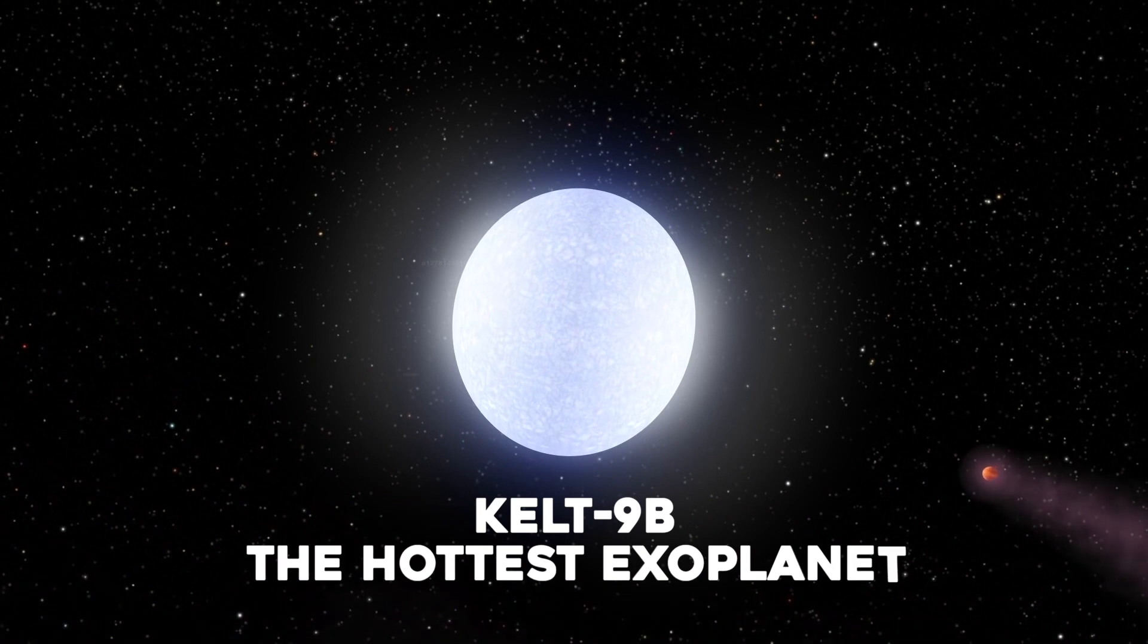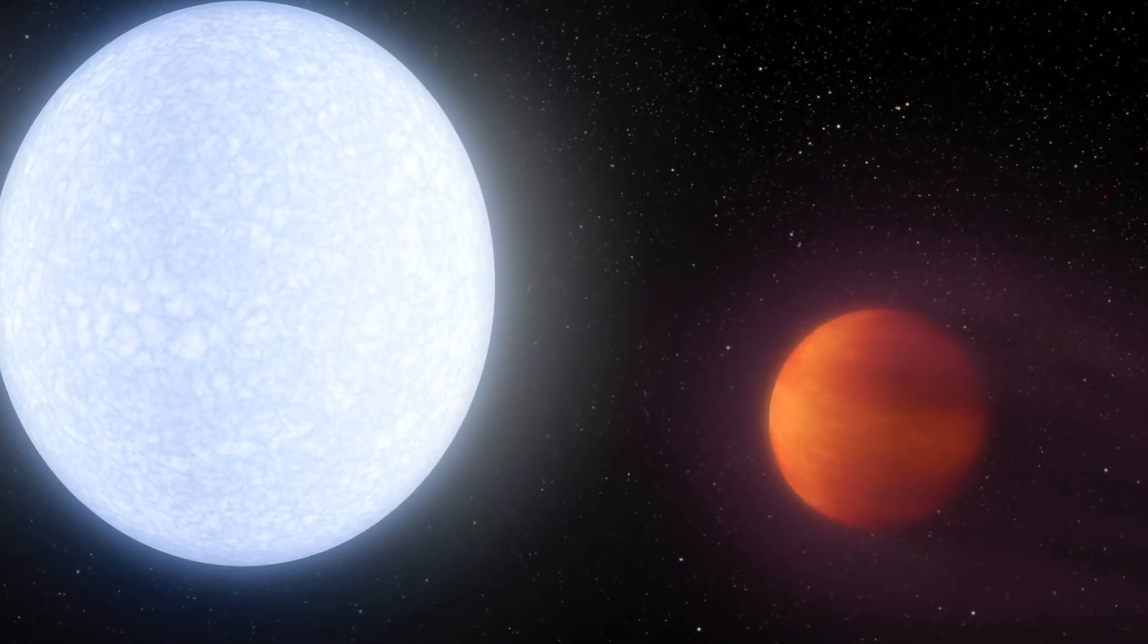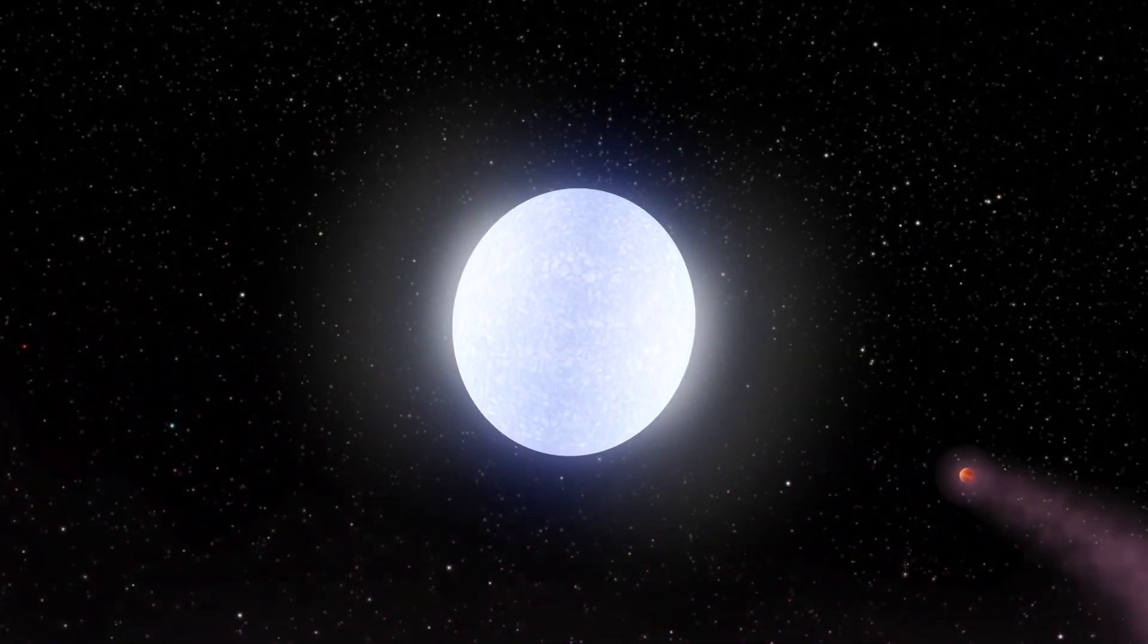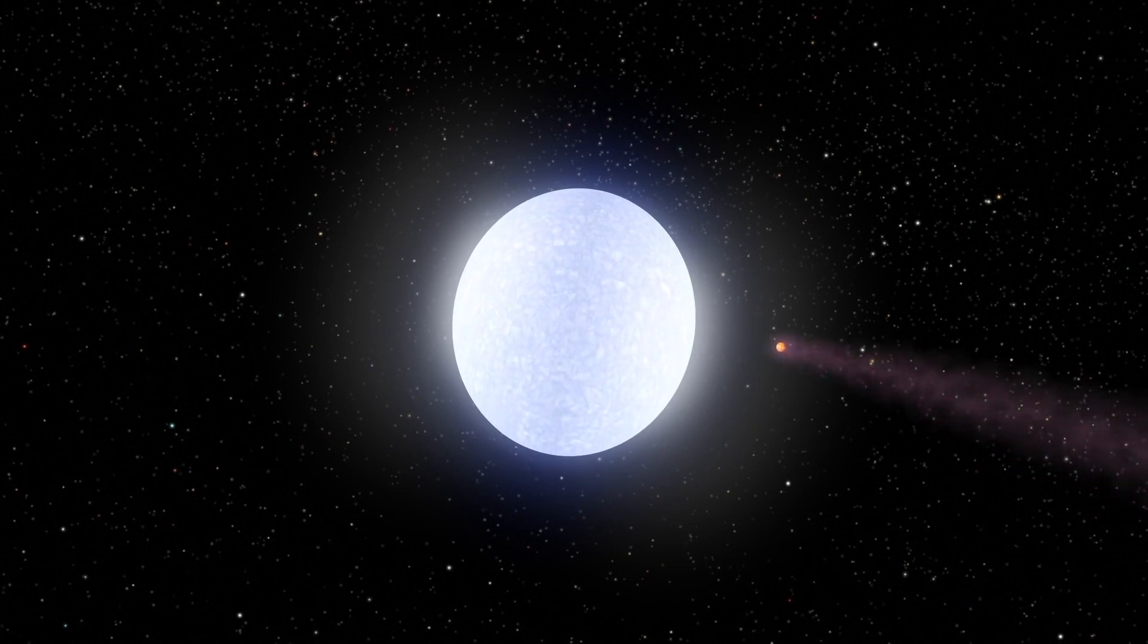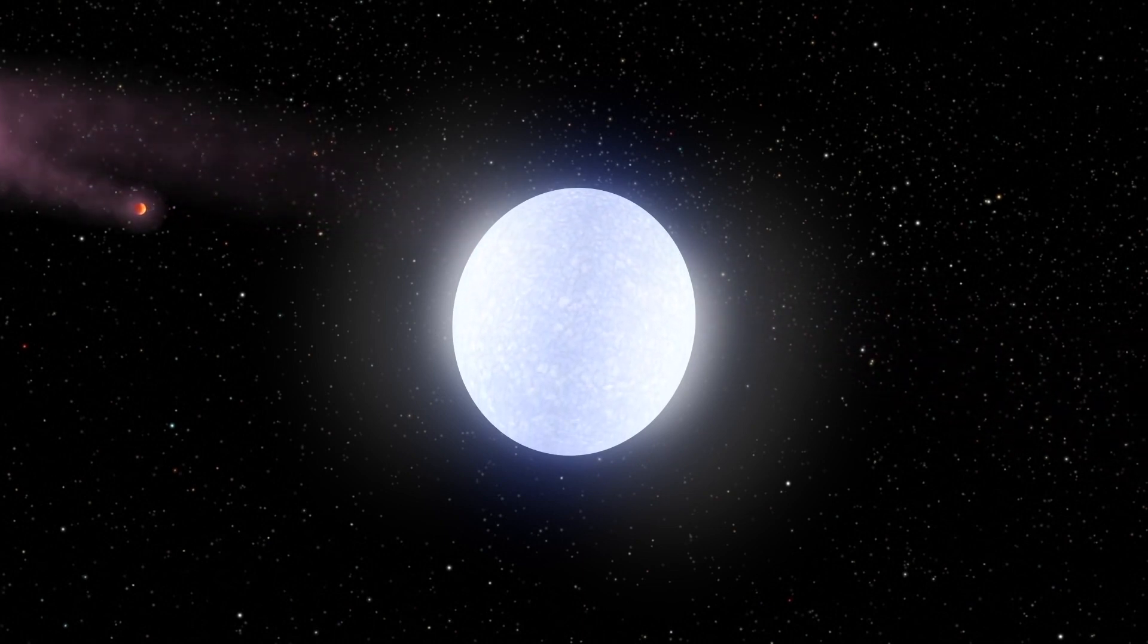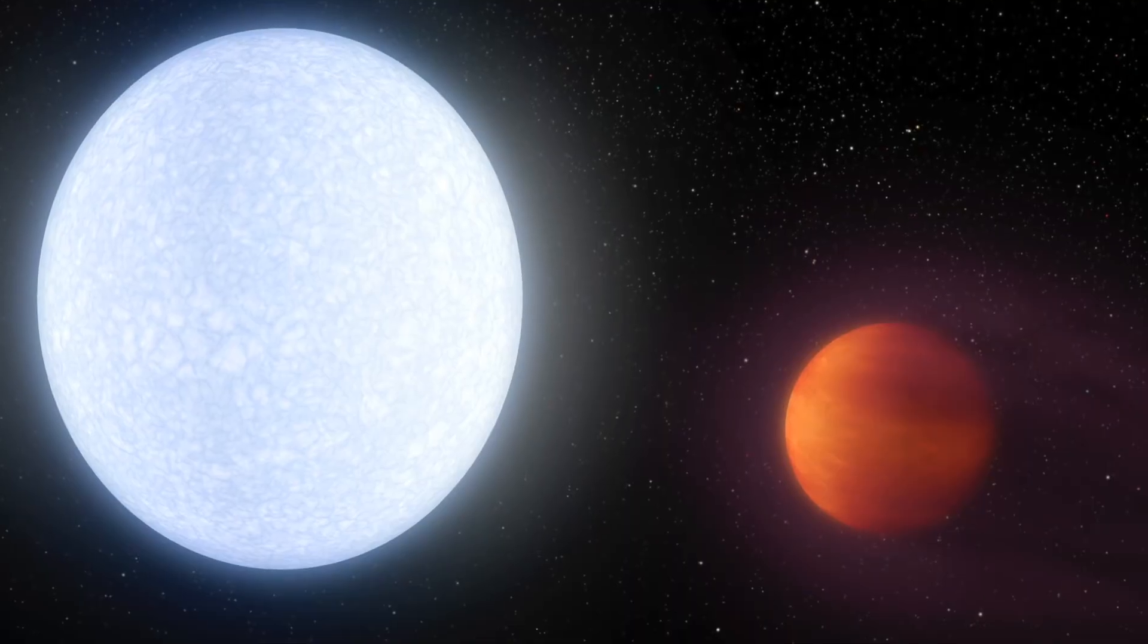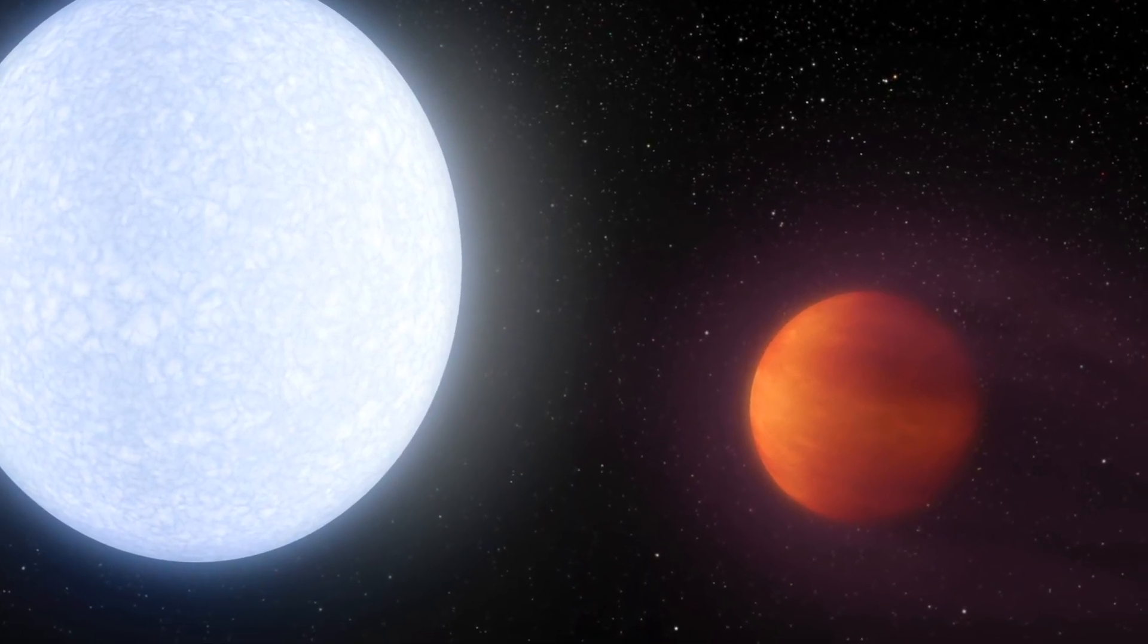KELT-9b – The Hottest Exoplanet. Ultra-hot Jupiter-type exoplanet KELT-9b is so scorching that it's even hotter than many stars. It orbits so close to its sun that its surface sizzles at 4,300 degrees Celsius.